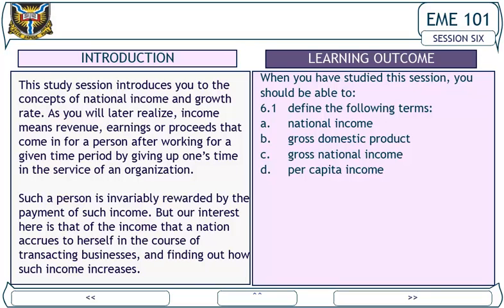Learning outcomes: when you have studied this session, you should be able to define the following terms — national income, gross domestic product, gross national income, and per capita income.